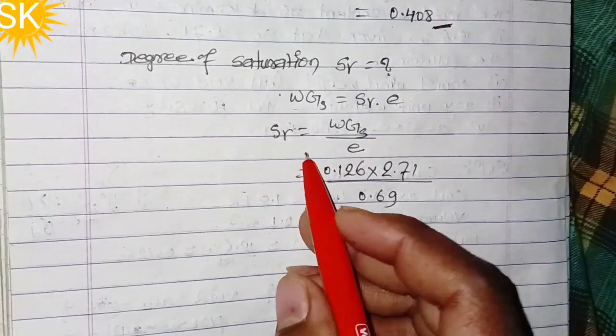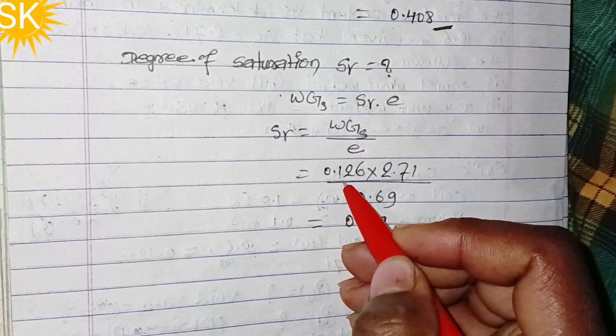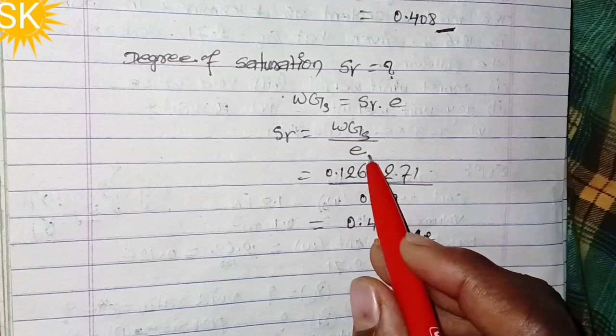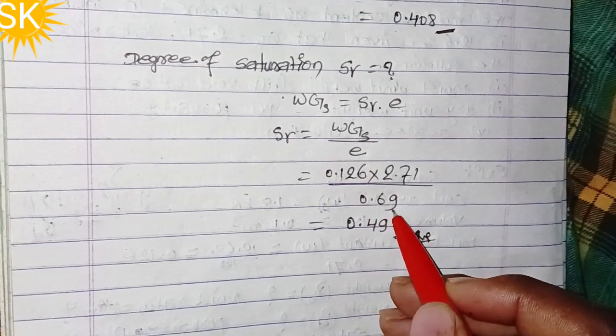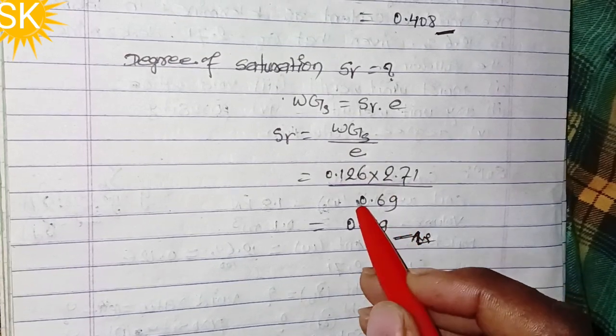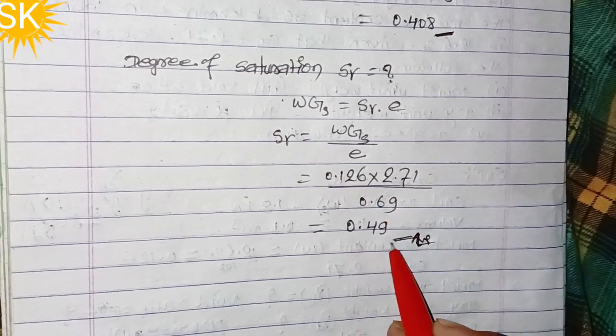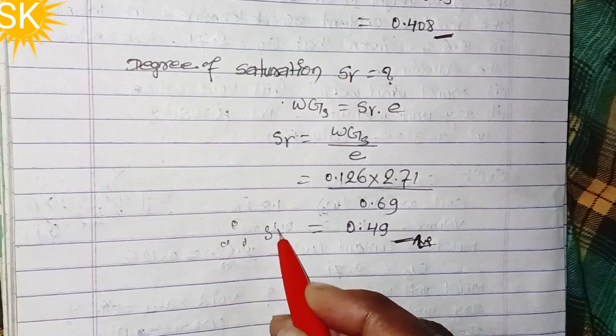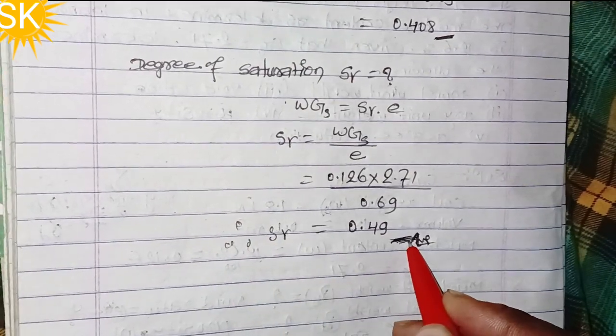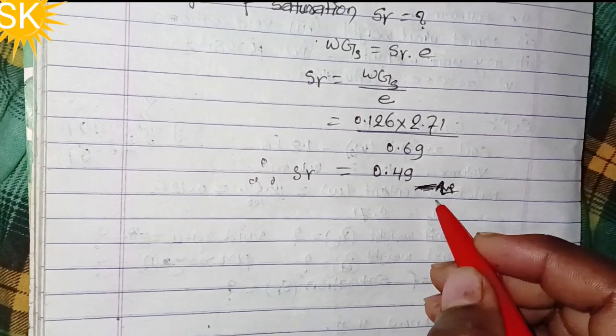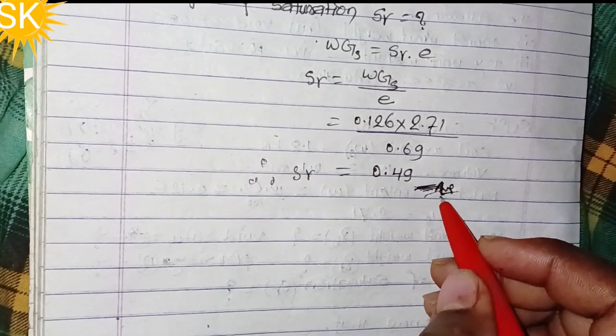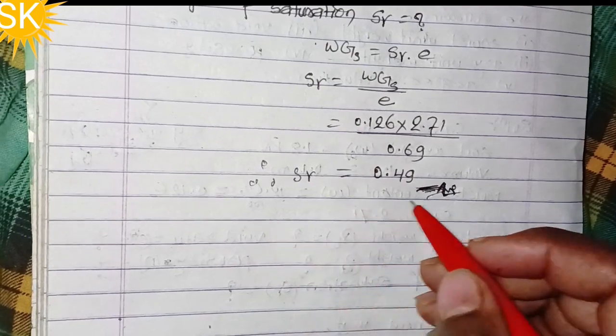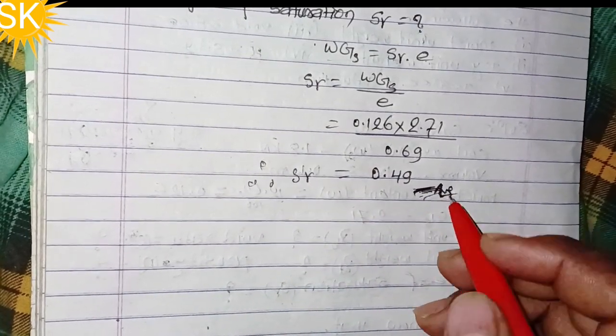Sr equals water content 0.126 times specific gravity 2.71 divided by void ratio 0.69. Multiplying and dividing gives degree of saturation Sr equals 0.49, or 49 percent.